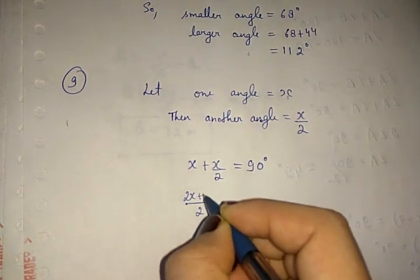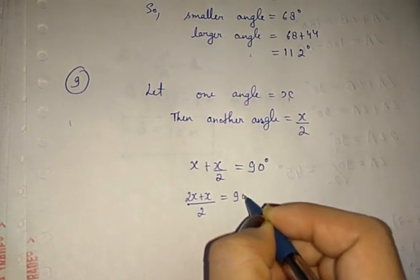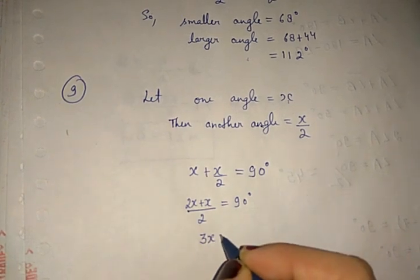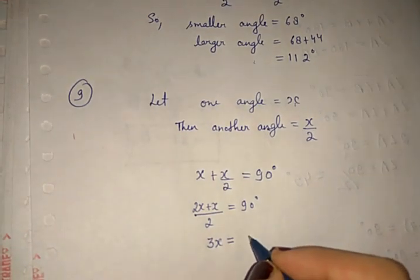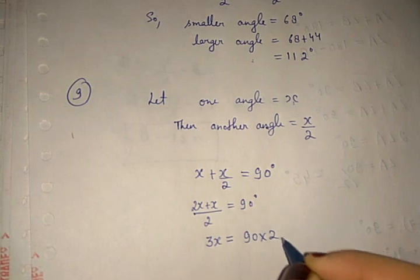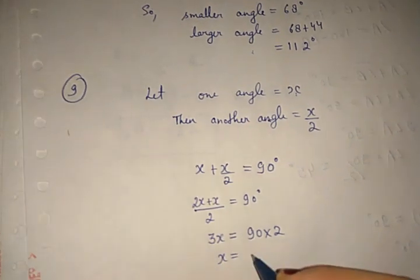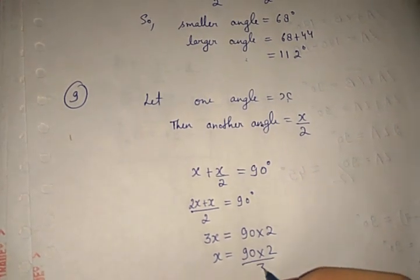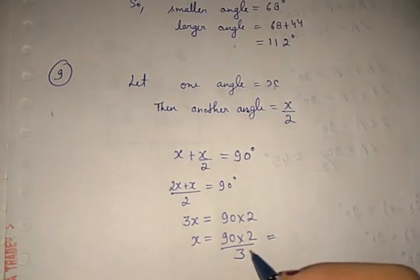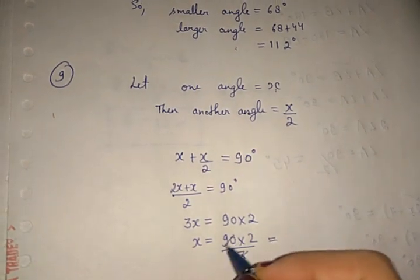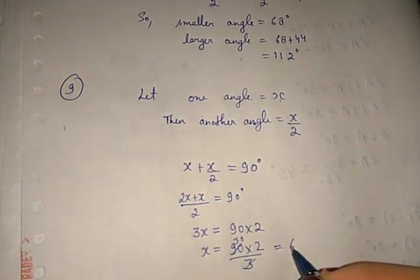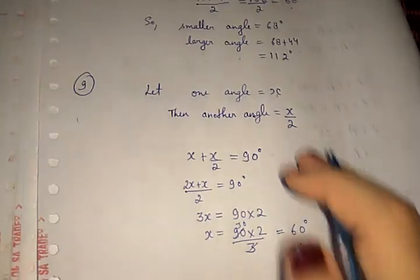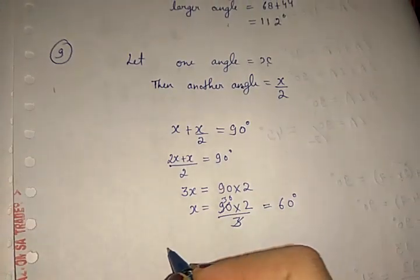Taking the LCM and solving: 2x plus x equals 90, which gives 3x equals 90 times 2, so x equals 60 degrees.